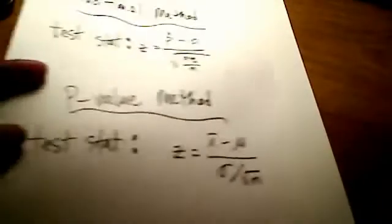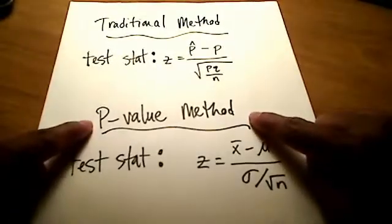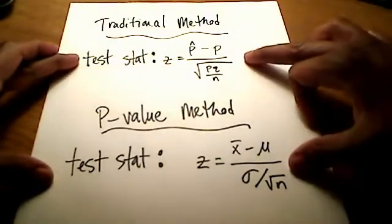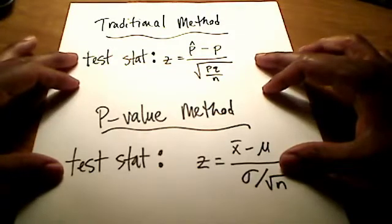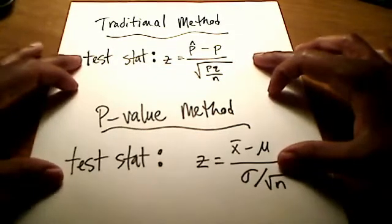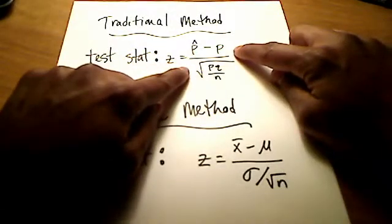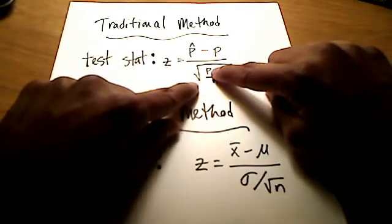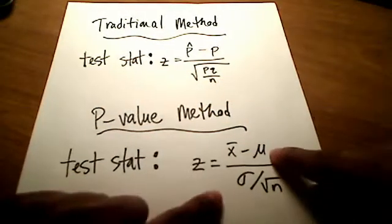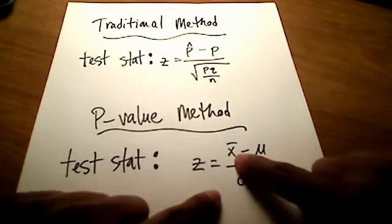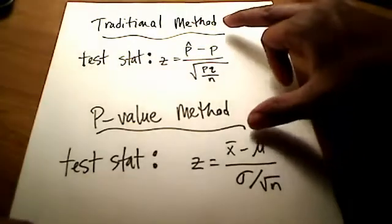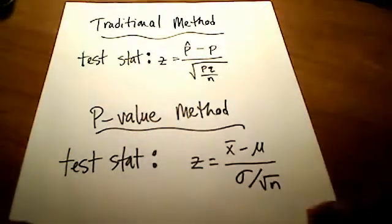What I showed in a previous video is the traditional method, and what I'm going to show in this video is the p-value method. Both methods require you to find a test statistic. For proportions, that would be p-hat minus p over the square root of p times q over n. Or if you're dealing with sample means and population means, you'd use the corresponding formula. Regardless of the method, both of them use test statistics.